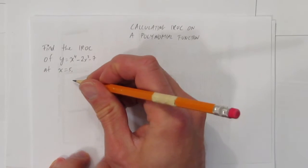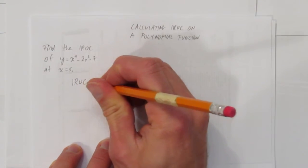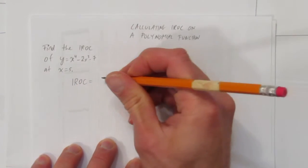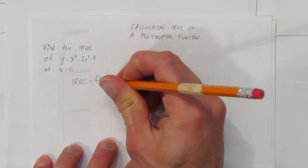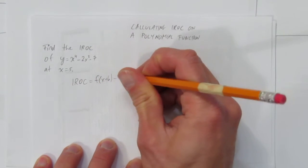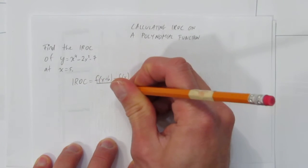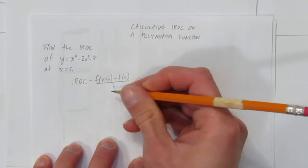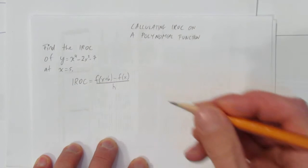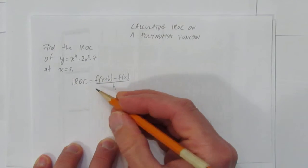Well, we start with our IROC equation. The equation we're using is IROC equals f at x plus h minus f at x all over h. And we're going to use a small value for h. That's how we get our instantaneous rate of change approximation.